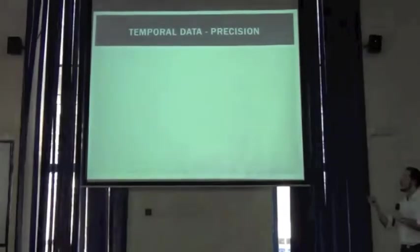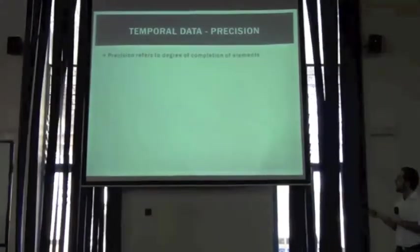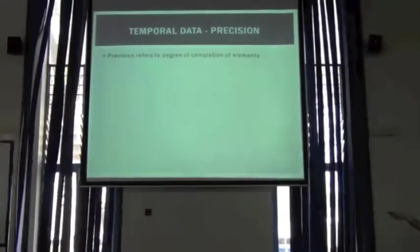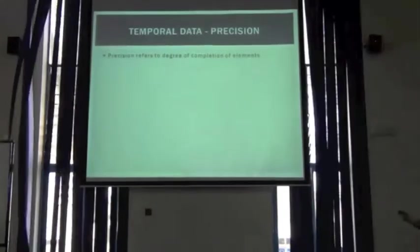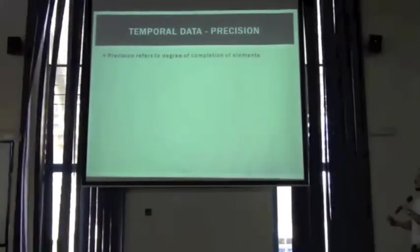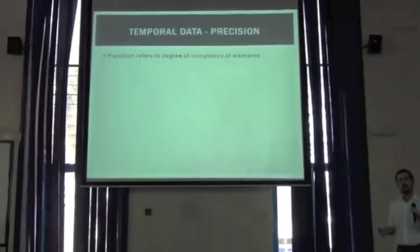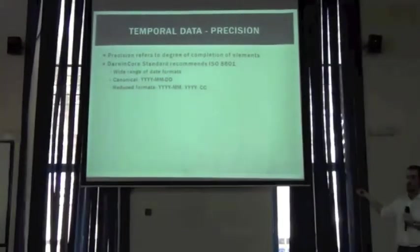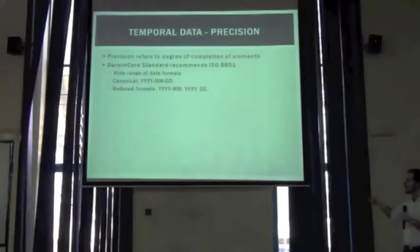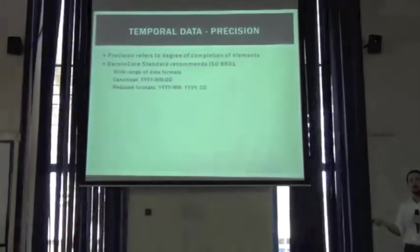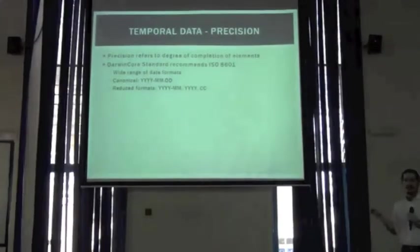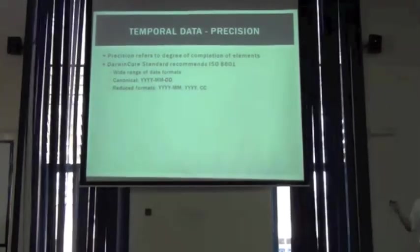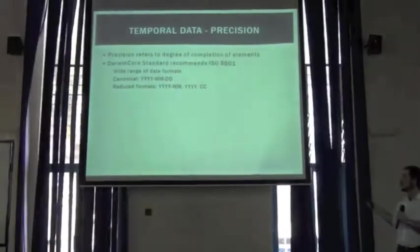Let's move on to temporal data and see what I mean by precision in temporal data. Again, the precision in a date depends on the degree of completion of that date. The more elements in that date, the more precise it would be. The Darwin Core standard recommends using the encoding schema in ISO 8601, which allows for a wide range of different date formats. The canonical, the ideal way of representing a date, is using a 4-digit year, 2-digit month, and 2-digit day.